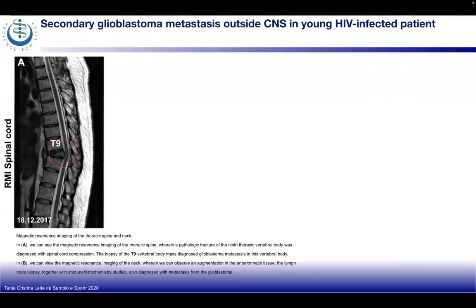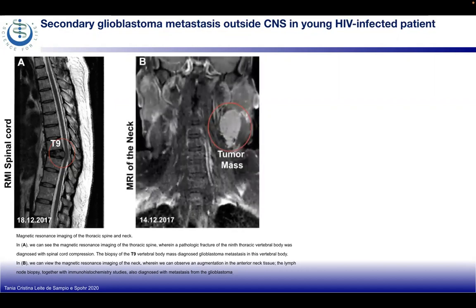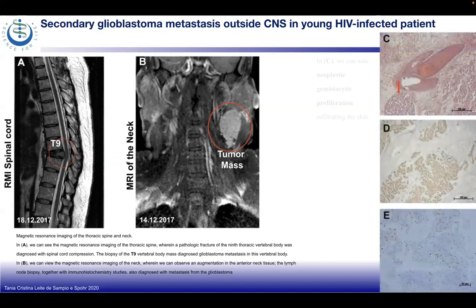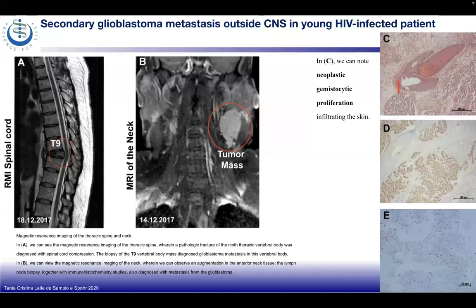In A, the MRI of the thoracic spine showed a pathological fracture of the ninth thoracic vertebral body diagnosed with spinal cord compression. The biopsy of the T9 body mass was diagnosed with glioblastoma metastases in the vertebral body. Looking at the anterior neck, augmentation in the anterior neck tissue was observed. The lymph node biopsy together with immunohistochemical studies also diagnosed metastases of the glioblastoma.